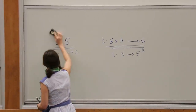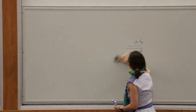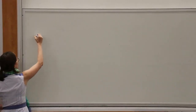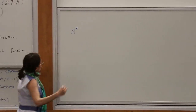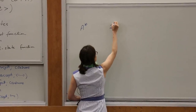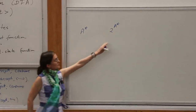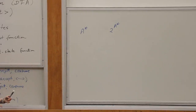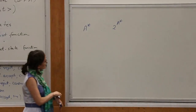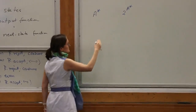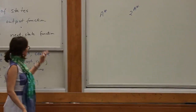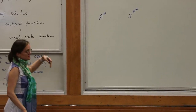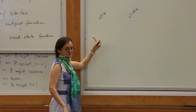Automata are structures that accept languages. In the first part of the lecture, I showed you that A*, the words over A, are an inductive data type. And it so happens that languages, which are just subsets of words, are a co-inductive data type. So this interplay between induction and co-induction appears in many places in theory of computation and PL. We're going to define now when a word is accepted by a state of an automaton, and then the language of the automaton is every word that that state accepts.